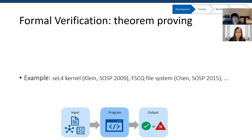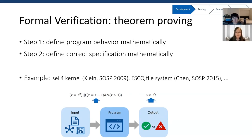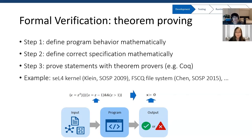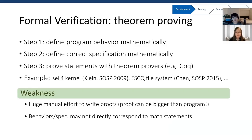Another way to do formal verification is to prove the program like proving a theorem. Several systems are proved this way, for example, the seL4 kernel and the FSCQ file system. To prove like this, first we need to define the program's behavior mathematically. Next, we also need to define the correctness specification mathematically. Finally, we send both to a theorem prover — for example, Coq — to determine whether the correctness specification holds true. A disadvantage is that describing the system mathematically can take huge manual effort; the proof is often several times the size of the program. Also, there may not be an easy correspondence between program behavior and mathematical statements — intelligence is needed to specify a program so that theorem provers can understand it.